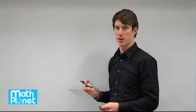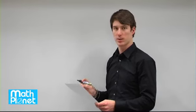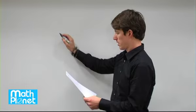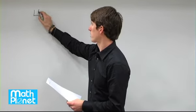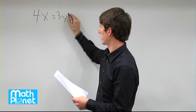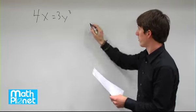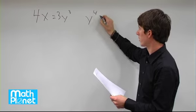So we're trying to find x times y squared and we're given two equations with x and y. The first is 4x equals 3y cubed and we also have y to the power of 4 equals 16.